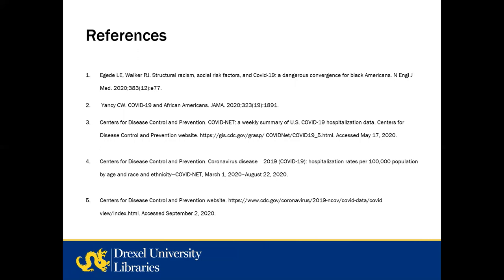Moving from in-text citations to the actual reference list: each reference is listed in order of usage, and every time you use that reference you cite it in text using the same reference number. When you create your reference list, put it on a new page in your document, just called 'References.' The reference list should be double-spaced. The number of citations in your reference list must match the number of in-text citations in your document — check that before you turn your paper in.